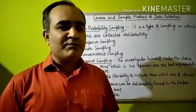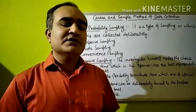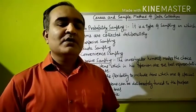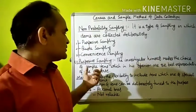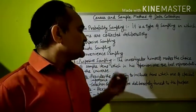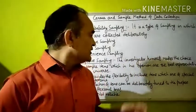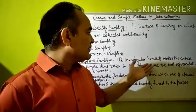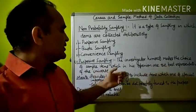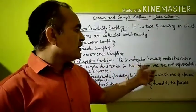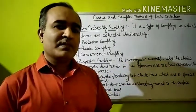We will discuss the different types one by one in detail. Let us start with purposive sampling. Purposive sampling is a type of sampling method in which the investigator himself makes the choice of sample items which, in his opinion, are the best representative of the universe.